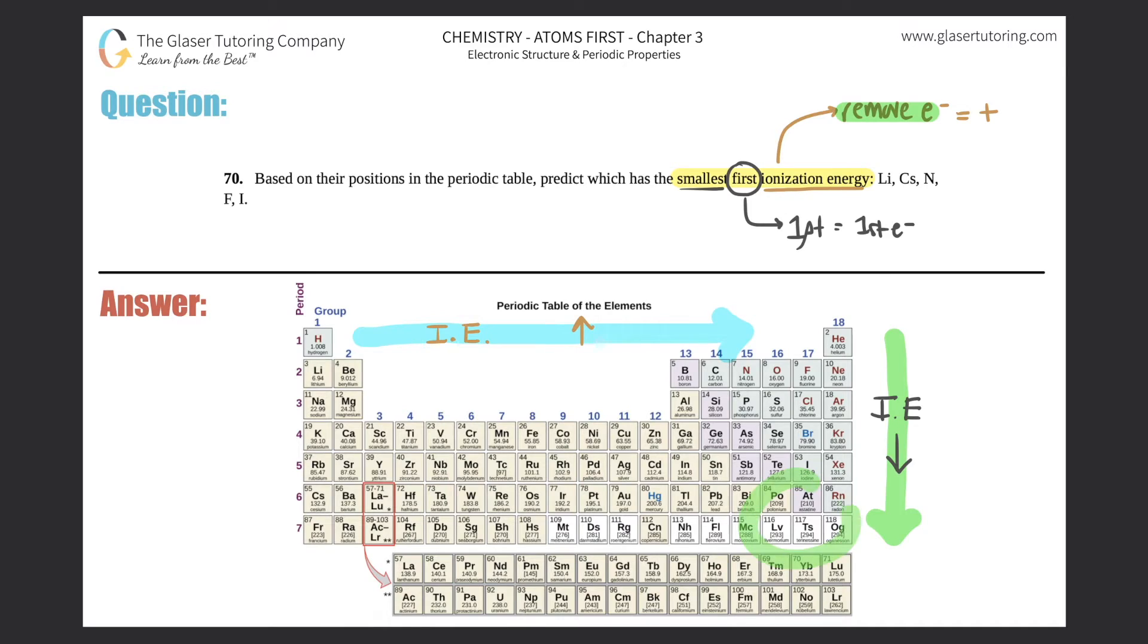Why is that? Because these elements down below are huge. Remember, as you go down the periodic table, your radius gets bigger and bigger. Those outer electrons are farther away from the nucleus, so they can leave more easily, making it easier—meaning less energy required.